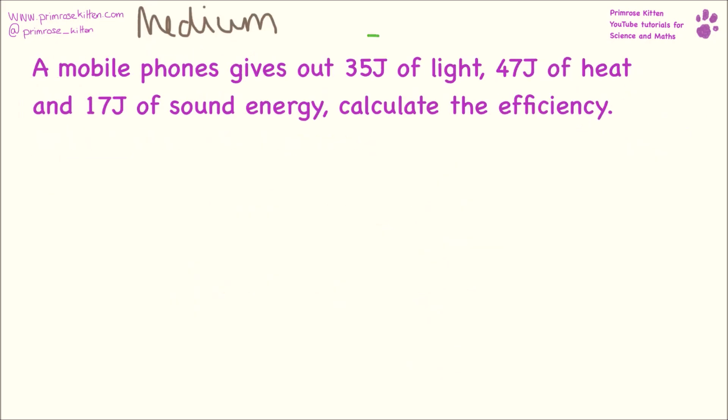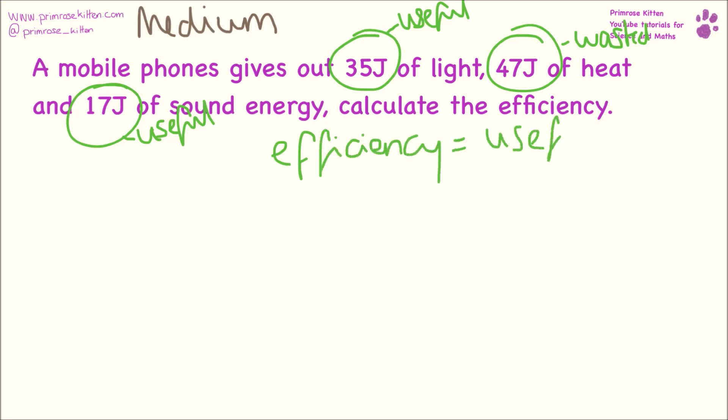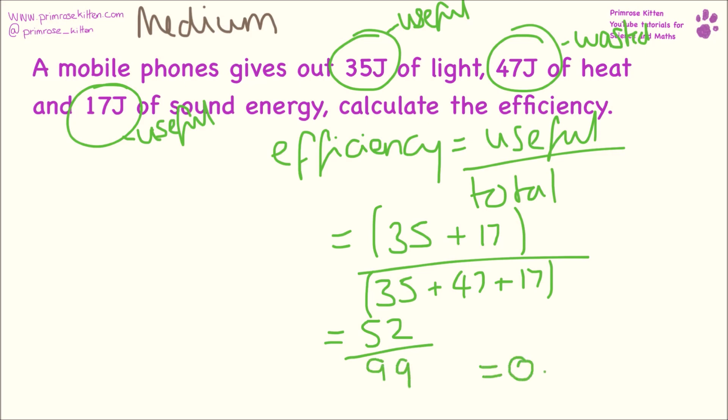A mobile phone gives out 35J of light, 47J of heat and 17J of sound energy. Calculate the efficiency. If you think about a mobile phone, light is useful, heat is wasted and sound is... useful. Our equation is efficiency equals useful over total. Our useful energy is 35 from light plus 17 from sound, and our total energy is 35 from light, 47 from heat and 17 from sound. Adding that up gives us 52 over 99. Working that out, it's 0.53 as the efficiency for the mobile phone.